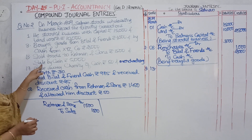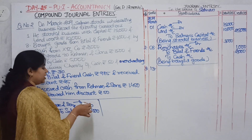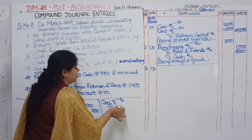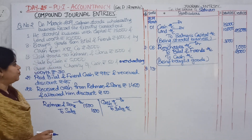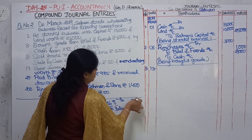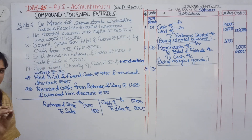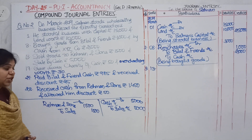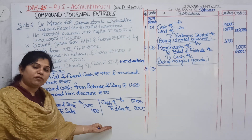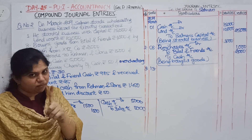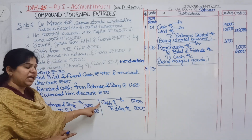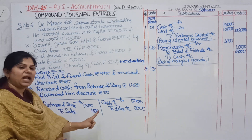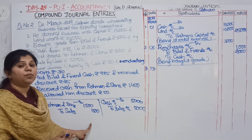This is a cash sale. Cash is coming in because goods are going out. Sales are being done for rupees 5,000. This transaction has taken place on the same day, 13th, and the nature of the transaction is also same — sales. So instead of writing two journal entries, we are preparing only one journal entry: Rehman and Sons account debit, cash account debit, to sales account — writing sales only once and adding up the amounts.